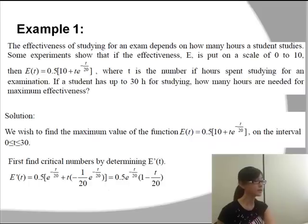First, we have to find the critical points by determining the derivative of E(t). That will be equal to 0.5 times e to the power of negative t over 20 times in bracket 1 minus t over 20.